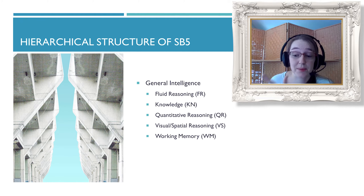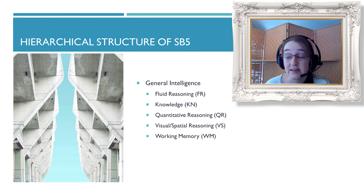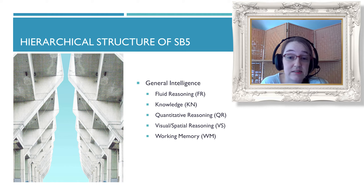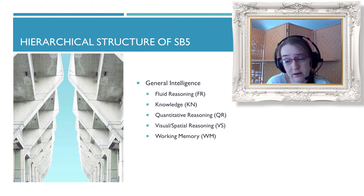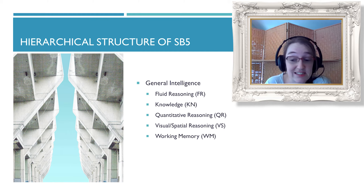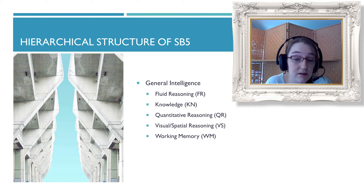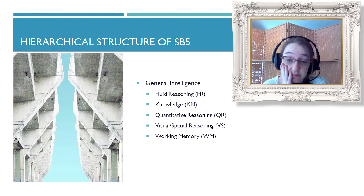Anywhere between 90 and 109 is labeled as 'average' — think of that as typical. Then 80 to 89 is 'low average.' Below that, 70 to 79 is labeled 'borderline impaired or delayed,' 55 to 69 is 'mildly impaired or delayed,' and 40 to 54 is 'moderately impaired or delayed.' And that's the lowest I have here.